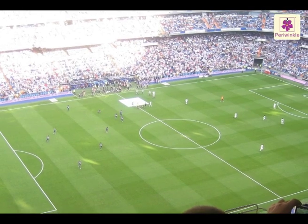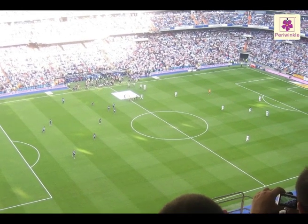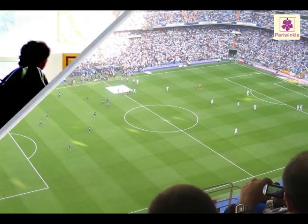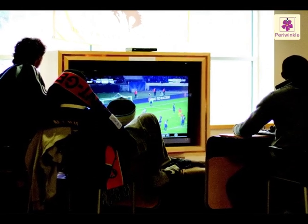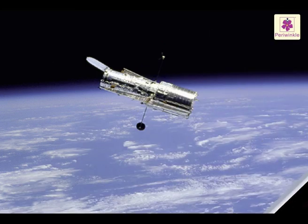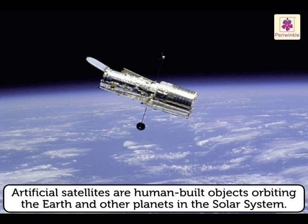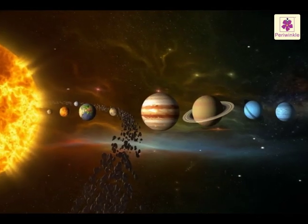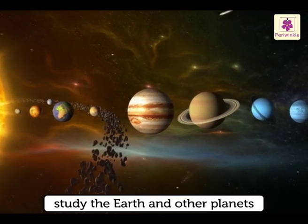Have you ever thought how the live coverage of something happening somewhere else in the world reaches your television set at home? It is through artificial satellites. Artificial satellites are human-built objects orbiting the earth and other planets in the solar system. They are used to study the earth and other planets in the solar system.